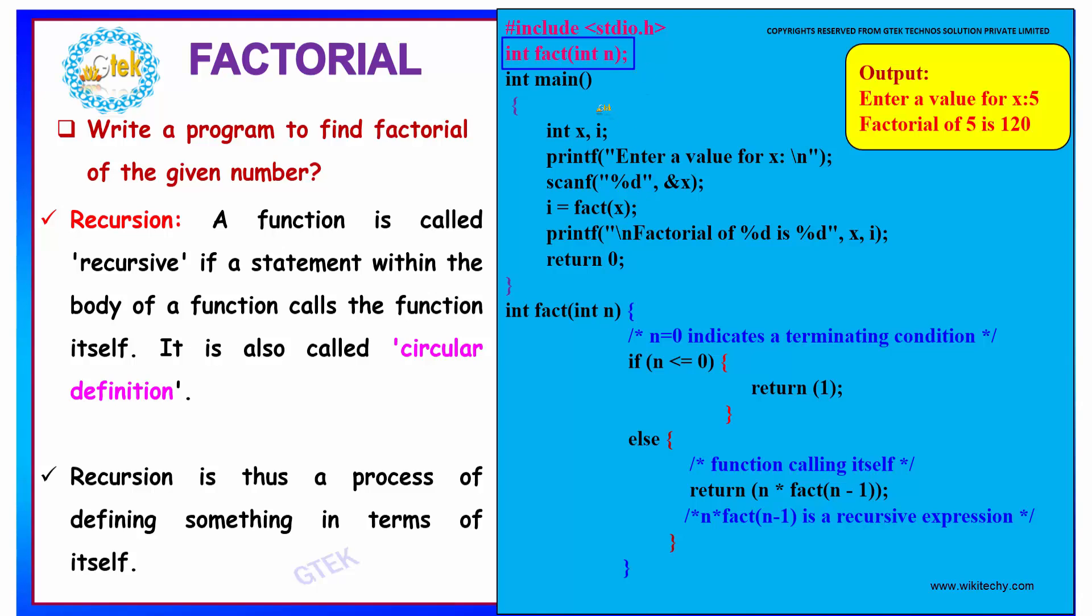And we are having a main function over here, which runs first on execution. Declaring the necessary variables, we have to get the value for which we have to find the factorial.